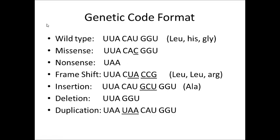Now let's move over to genetic code. We've moved from English code into genetic code — same format where we have triplets and each triplet encodes for a different amino acid. The wild type is still our normal, perfect, no-mutation sequence. The code is: UUA, CAU, GGU. UUA encodes for leucine, CAU encodes for histidine, and GGU encodes for glycine.